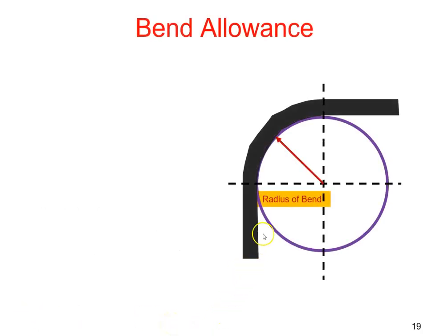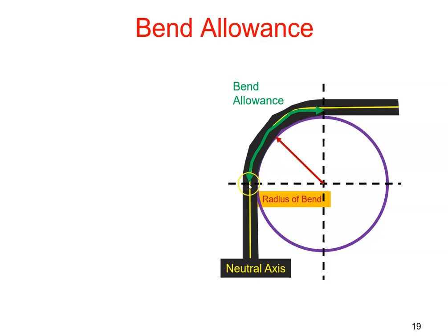Assume we have a piece of sheet metal and we have bent it. We will have a bend radius and there will be a neutral axis along the aluminum. The distance from the start of the bend to the end of the bend along the neutral axis, that is known as the bend allowance.